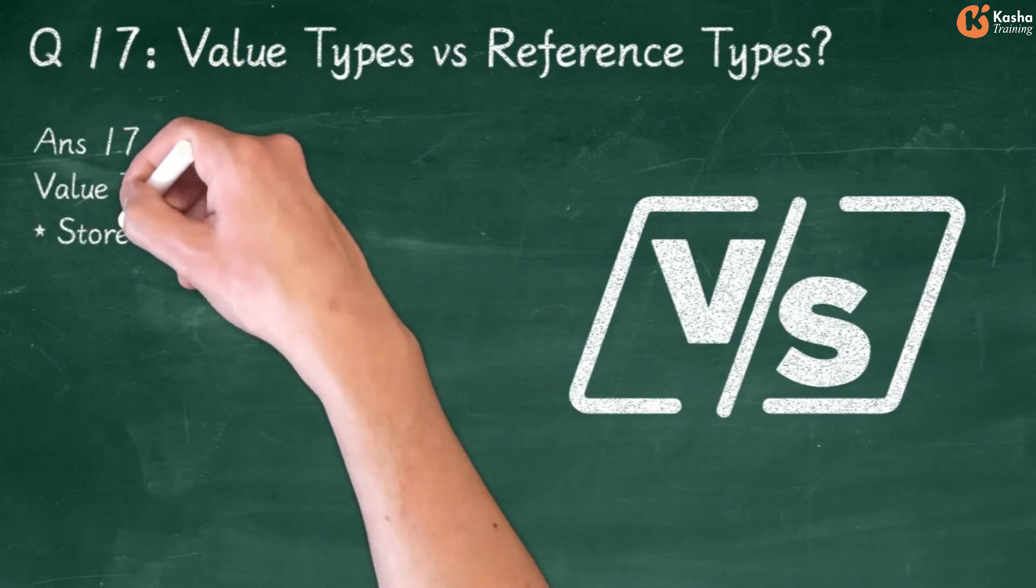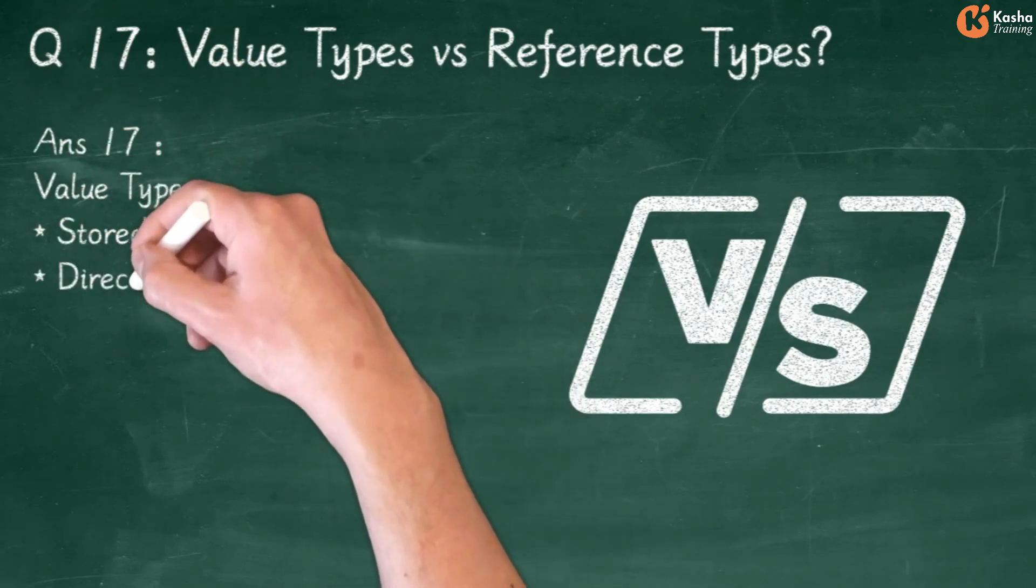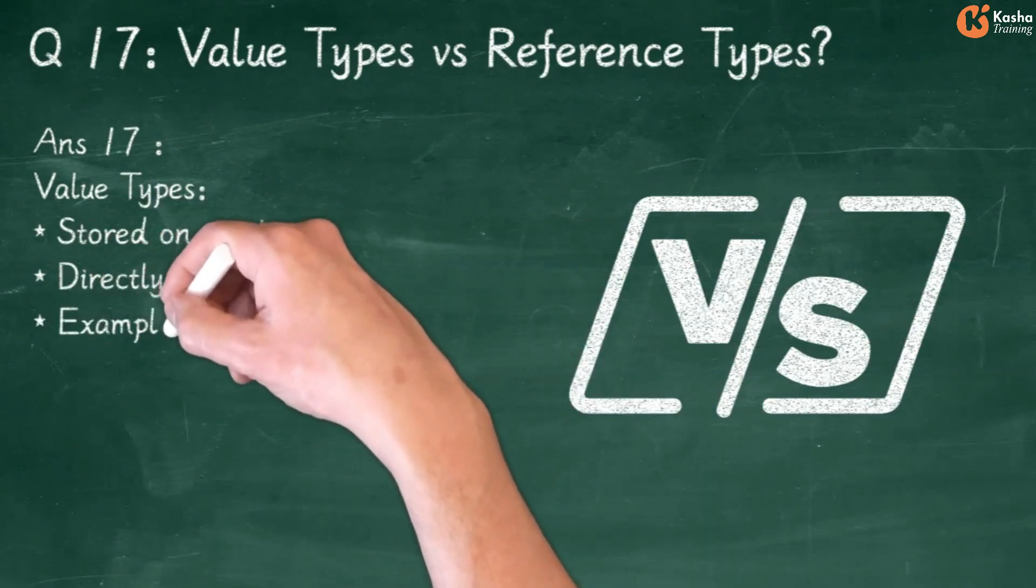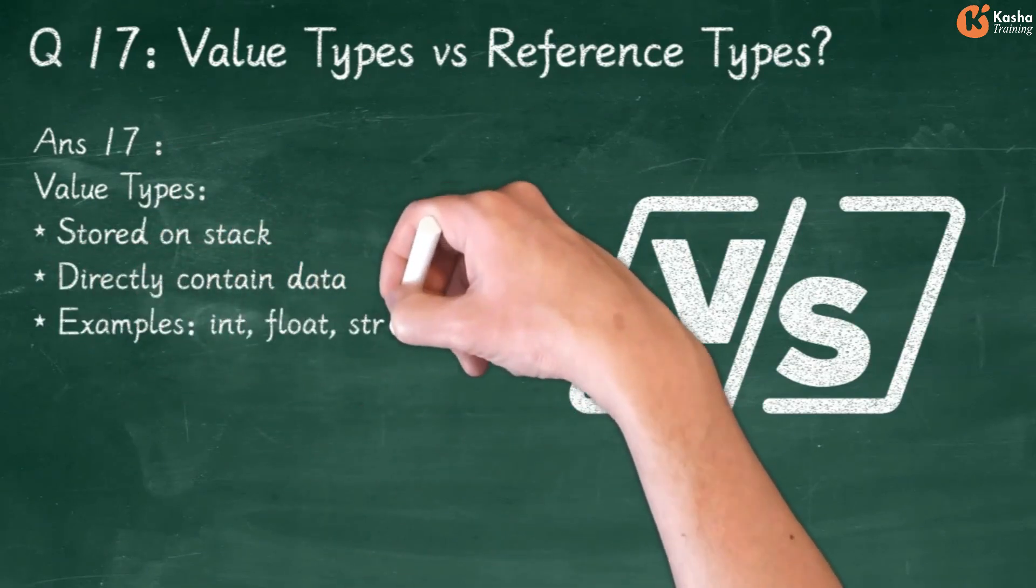Answer 17: Value Types are Stored on Stack, Directly Contain Data. Examples include int, float, and struct.